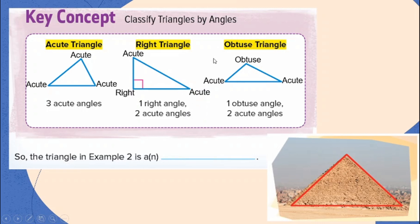And our last classification of triangle is what we call obtuse triangle. Obtuse triangle contains one obtuse angle, which can be found on the top, and two acute angles, which can be found on the left and right. Once again, these are the three classifications of triangles according to its angles: acute triangle, right triangle, and obtuse triangle.